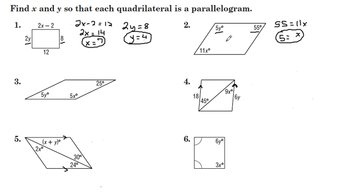We'll also use the fact that consecutive angles in a parallelogram are supplementary. We'll take 5y plus 55, and we'll set it equal to 180. We'll subtract 55 from both sides. 180 minus 55 is 125. We'll divide both sides by 5. y is 25.